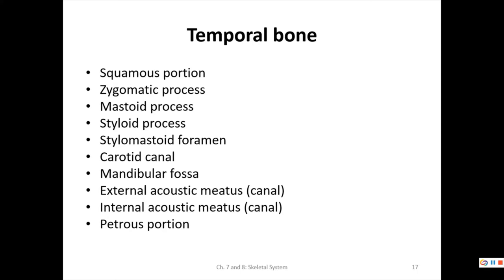Next is the temporal bone. We'll find the squamous portion, zygomatic process, mastoid process, styloid process, stylomastoid foramen, carotid canal, mandibular fossa, external and internal acoustic meatus, and the petrous portion. Remember, if there's an internal there's an external — we don't use terms we don't need in anatomy.